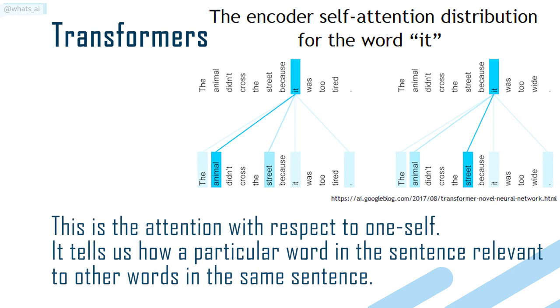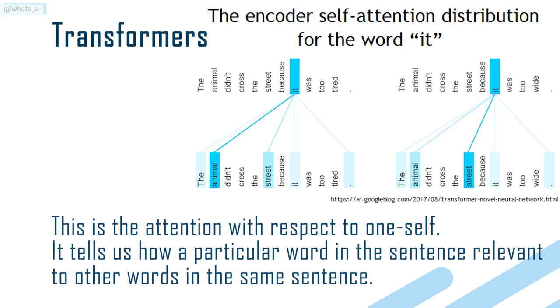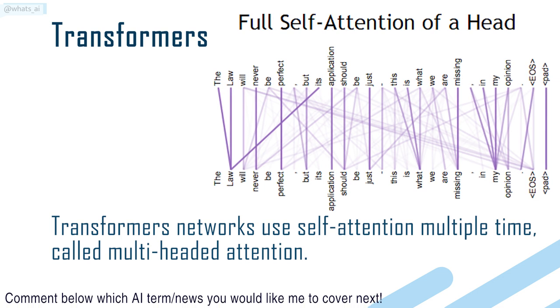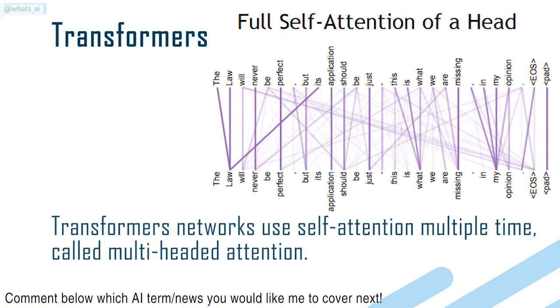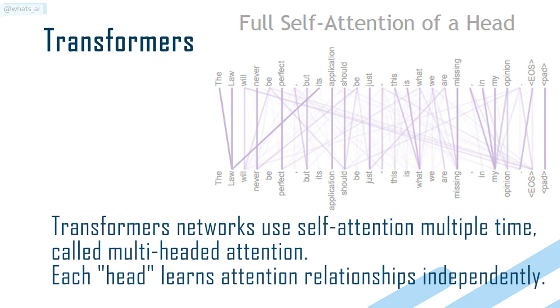It tells us how a particular word in the sentence is relevant to other words in the same sentence. Transformers networks use self-attention multiple times, called multi-headed attention. Each head learns attention relationships independently.